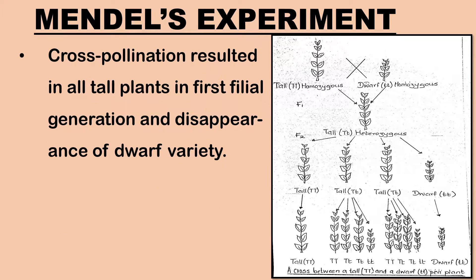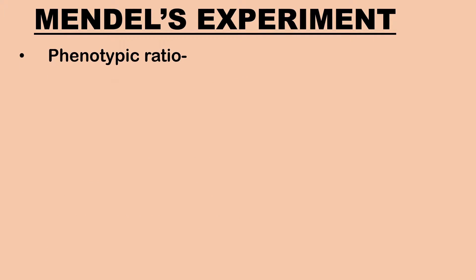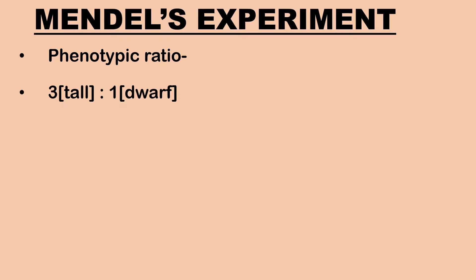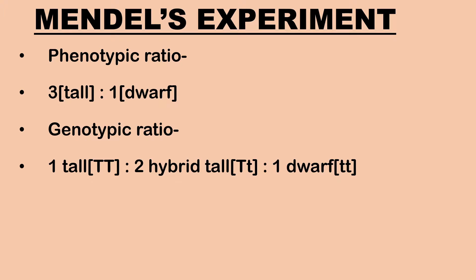Mendel cross-pollinated both the varieties and observed that in the first filial generation F1, all the plants were tall. He allowed selfing of F1 hybrids and observed that the character of dwarfness, which had disappeared in the first generation, had reappeared in the second generation. The ratio of tall dominant plants and recessive dwarf plants was 3:1, known as the phenotypic ratio. The ratio of pure tall to hybrid tall to dwarf is 1:2:1, known as the genotypic ratio.